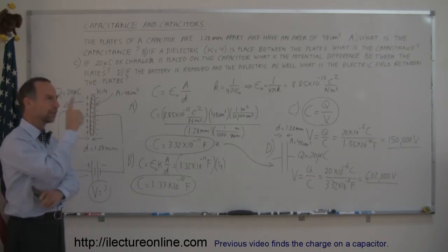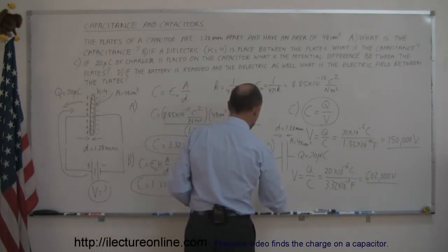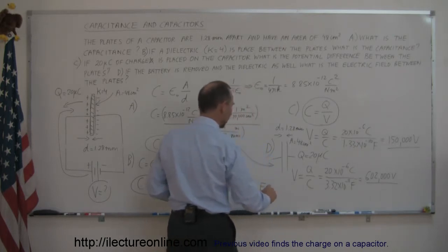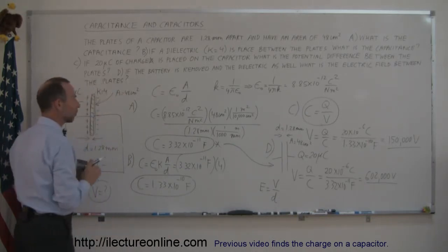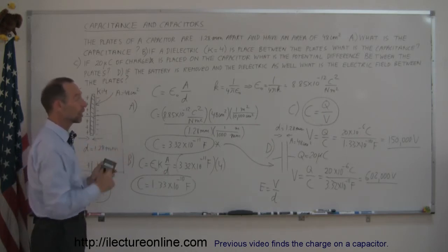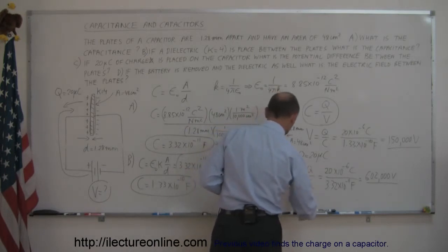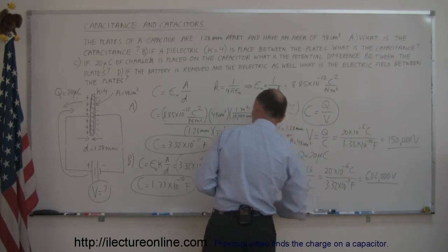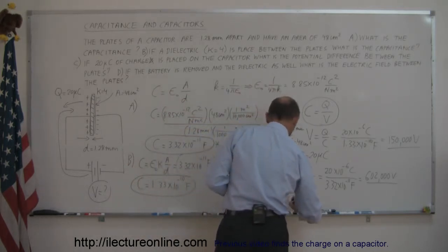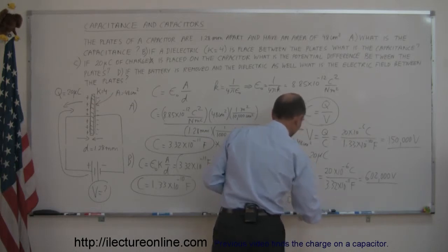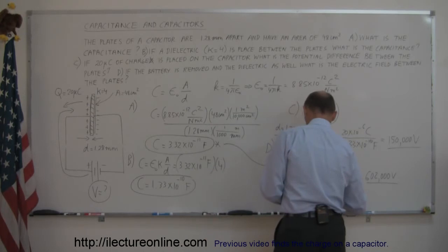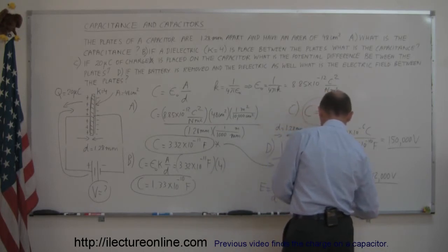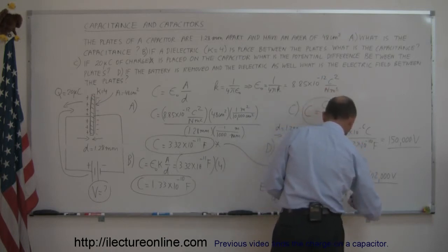The electric field strength equals the potential difference divided by the distance. The more potential difference over a small distance, the stronger the electric field. So the electric field equals 602,000 volts divided by the distance of 1.28 millimeters, which is 0.00128 meters. Dividing 602,000 by 0.00128 gives 4.7 times 10 to the eighth volts per meter.